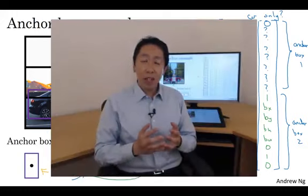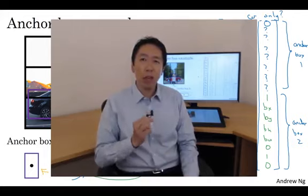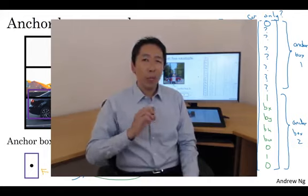So that's it for anchor boxes. And even though I've motivated anchor boxes as a way to deal with what happens if two objects appear in the same grid cell, in practice that happens quite rarely, especially if you use a 19 by 19 rather than a 3 by 3 grid. You know, the chance of two objects having the same midpoint out of these 361 cells, it does happen, but it doesn't happen that often.